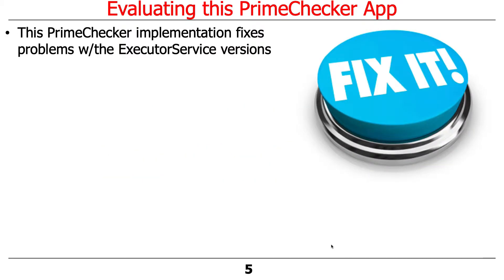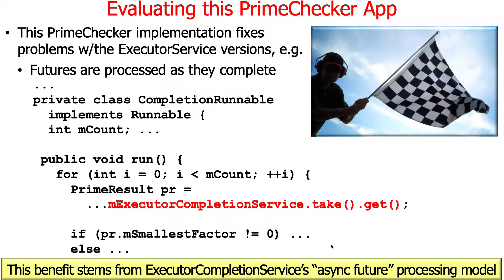The main pros are that this solution fixes the problems with the executor service we looked at before. One of the main things it fixes is that we don't have to do the wackiness of waiting for futures in some order other than when they complete. You can see this code just gets the futures as they complete — that's the asynchronous future processing model. Otherwise, we'd have to wait in some order that would be more complicated if things didn't finish in the order we wanted.